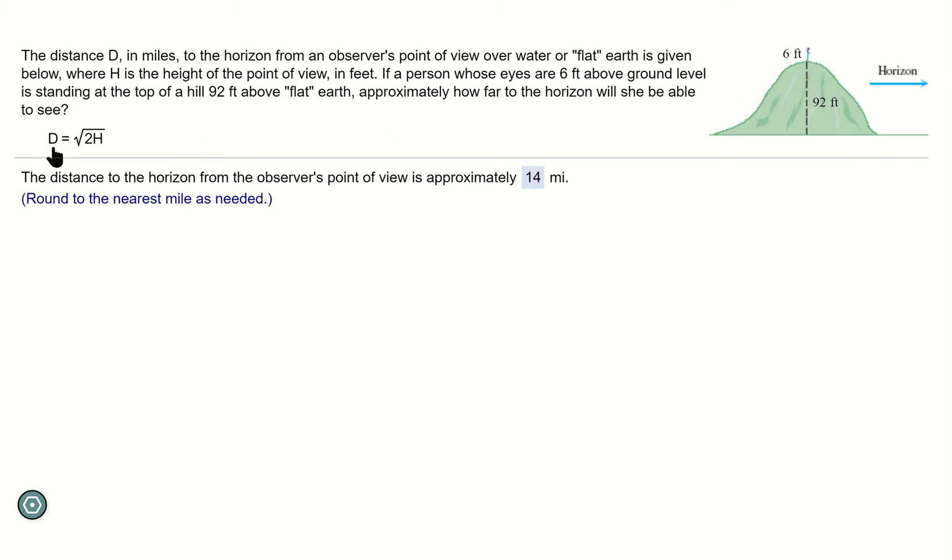we use is d = √(2h), where d is the distance to the horizon and h is the height of the point of view. We notice that in this case, the hill itself is 92 feet high, and the person's eyes, which is the point of view of the observer, is 6 feet above that.